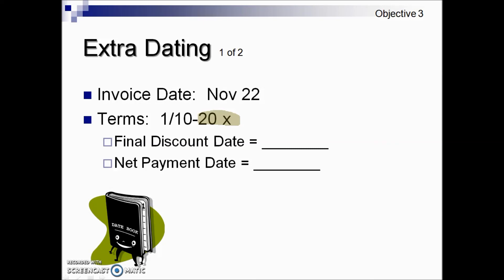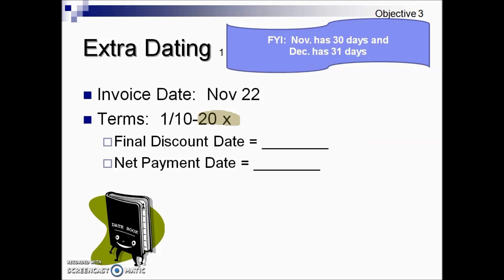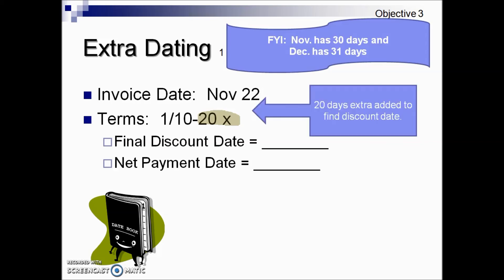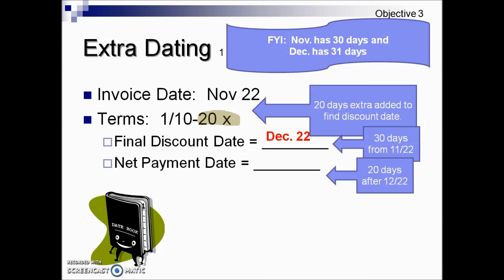Here we have an example with an invoice date of November 22nd. The terms are 1/10 with an extra 20 days, and they're asking us to calculate the final discount date. That means there are 30 days beyond our invoice date for the individual to be eligible for the 1% discount. November has 30 days and December has 31. We add 30 days onto November 22nd, which puts us at December 22nd. No information is given for the net amount, so we add 20 days onto December 22nd, bringing us into the next year: January 11th.